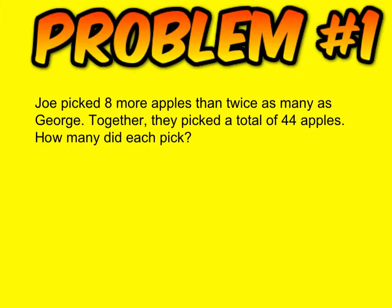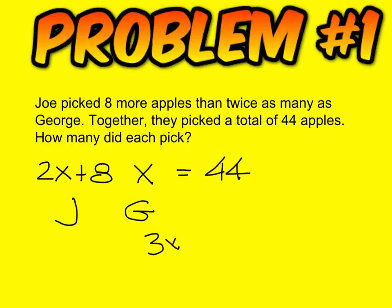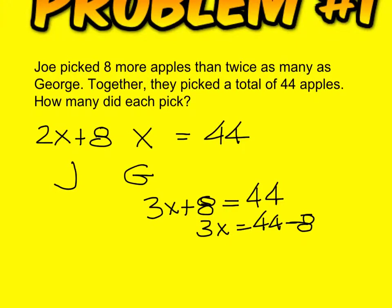Joe picked 8 more apples than twice as many as George. George would have to be X, and Joe is going to be plus 8 more than 2 times X. And the total is 44. So you would end up with 3X plus 8 equals 44, which is 3X equals 44 minus 8. And I need to have some more room here. 3X equals 36, so X is 12. George would have 12, and the other one would have 32.